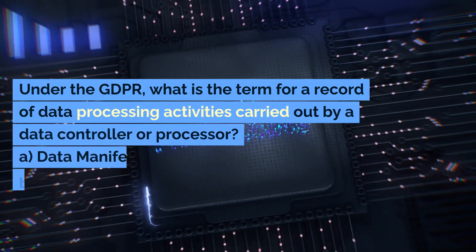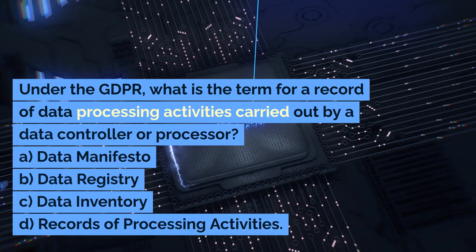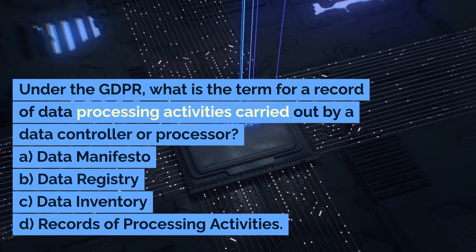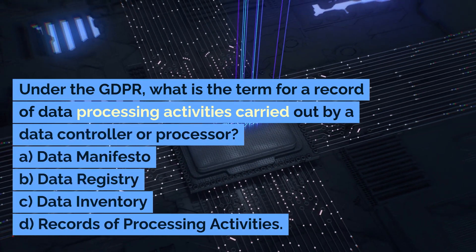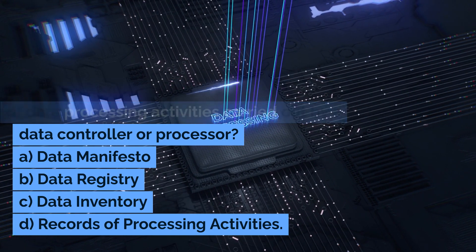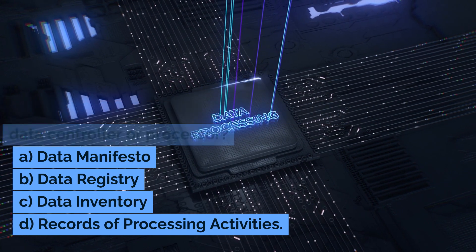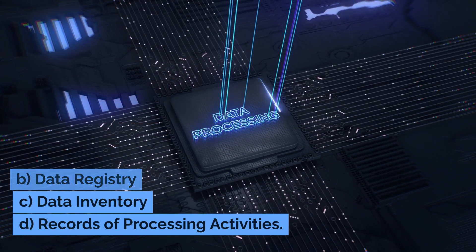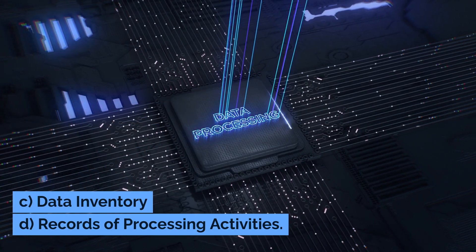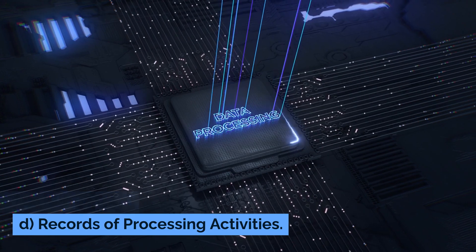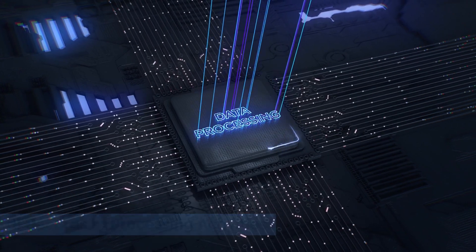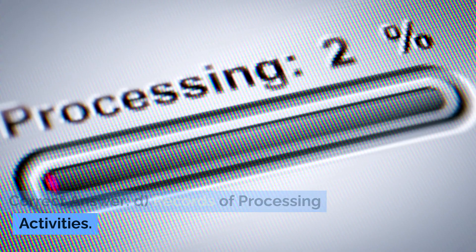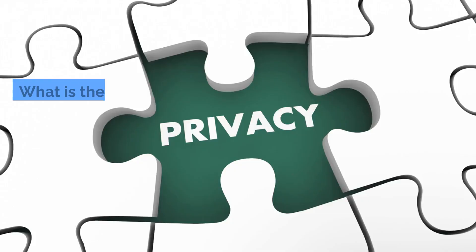Under the GDPR, what is the term for a record of data processing activities carried out by a data controller or processor? A. Data manifesto. B. Data registry. C. Data inventory. D. Records of processing activities. Correct answer: D. Records of processing activities.